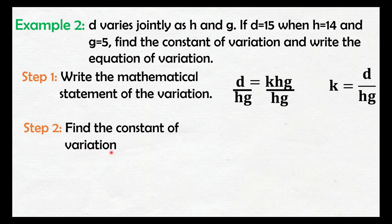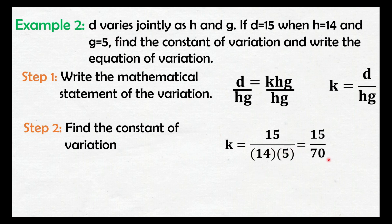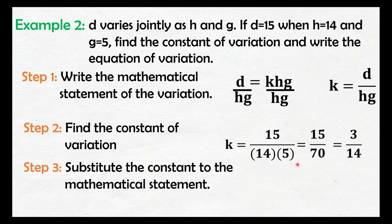Step two: find the constant of variation. Substitute lang natin yung mga given values ng D, H, G. Yung value ng D natin ay 15, tapos yung H natin ay 14, at yung G natin ay 5. Then simplify — that is 15 over 70. And then simplify that is 3 over 14, so iyan yung lowest term natin. So yung K natin dito ay 3 over 14. And step three: substitute the constant to the mathematical statement. So makukuha natin ay D equals 3 over 14 HG. Gamit itong mathematical statement natin na D equals KHG, pinalitan lang natin si K dito ng 3 over 14. So ito na yung pinaka mathematical equation natin.